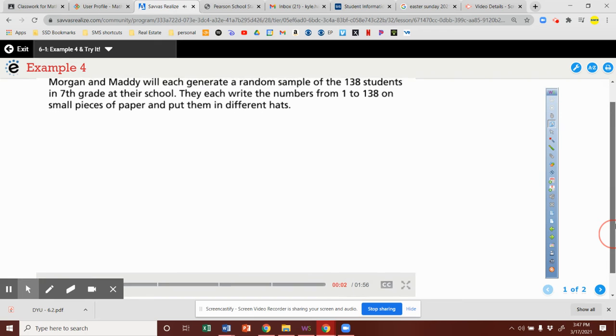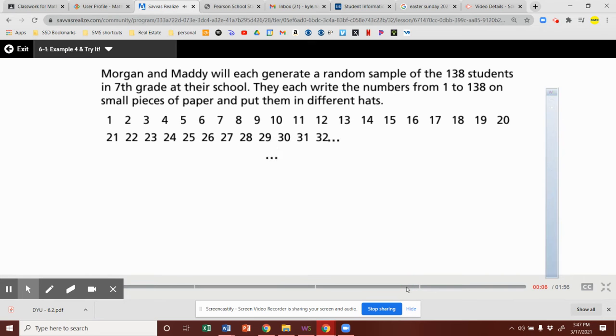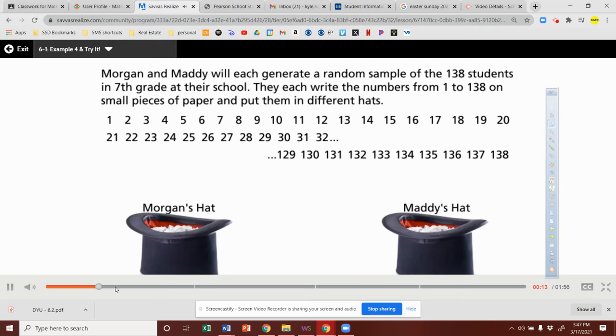Morgan and Maddie will each generate a random sample of the 138 students in seventh grade at their school. They each write the numbers from 1 to 138 on small pieces of paper and put them in different hats.